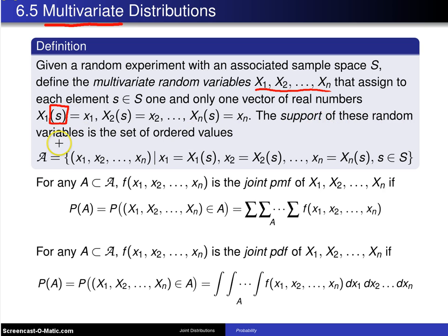The support of these random variables is the set of ordered values. Script A is used for the support and it is the set of all x₁ up to xₙ such that x₁ equals X₁(s), x₂ equals X₂(s) all the way up to xₙ equals Xₙ(s) for every s an element of S.